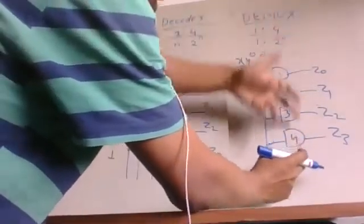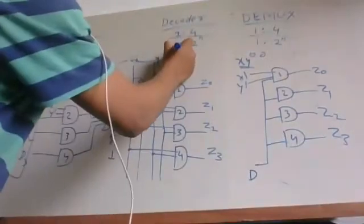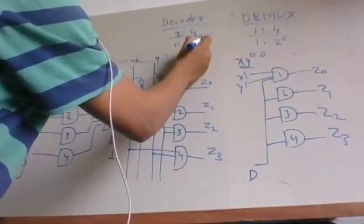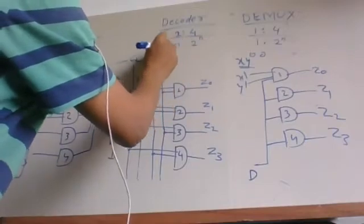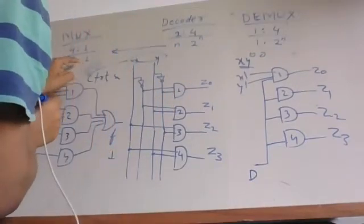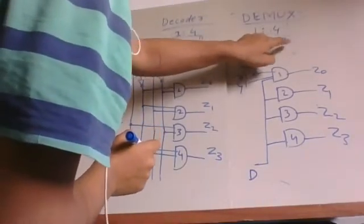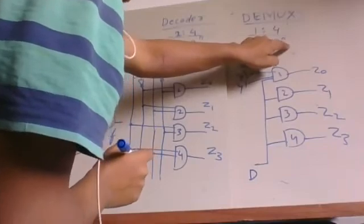In general, if there are n inputs, the decoder output will be 2^n. The same applies to multiplexer: a 2^n-to-1 multiplexer and demultiplexer.